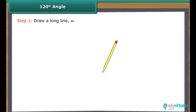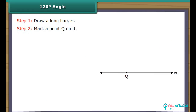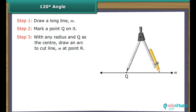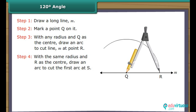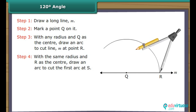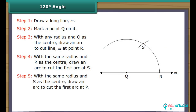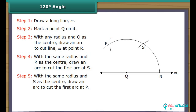Construction of 120 degree angle. Draw a long line M and mark a point Q on it. With any radius and Q as the centre, draw an arc to cut line M at point R. With the same radius and R as the centre, draw an arc to cut the first arc at S. With the same radius and S as the centre, draw an arc to cut the first arc at P. Join P to Q. Angle PQR is formed, which measures 120 degrees.